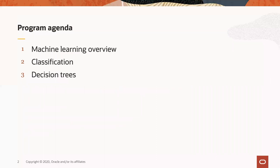I'm going to cover three things: a quick overview of machine learning itself, a quick overview of one particular technique — there are many, but one particular technique that we use in this workshop called classification — and then finally, because you don't use techniques, you actually use algorithms to solve problems, I'm going to talk about the decision trees algorithm, which is the one that we use to classify credit for our particular customers.